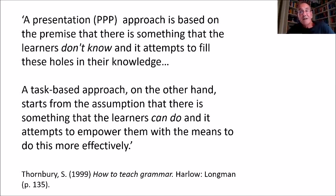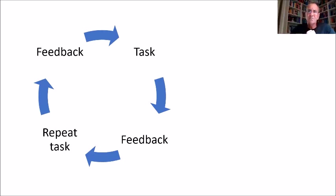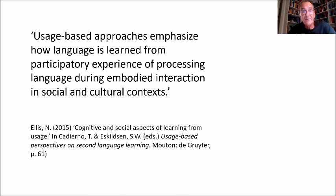The task-based cycle starts with a task, then students get feedback on the task and suggestions for how to do it better, they repeat the task, and so on. That was very much the pedagogical model underpinning the Dogme/Teaching Unplugged approach — the only difference between Dogme and task-based learning being that it attempted to do that using minimal materials. More recently, the Dogme approach has received theoretical support from a set of theories generally known as usage-based approaches.